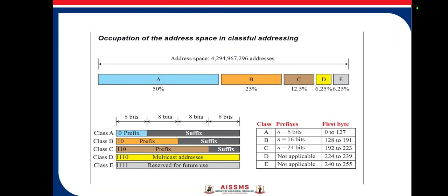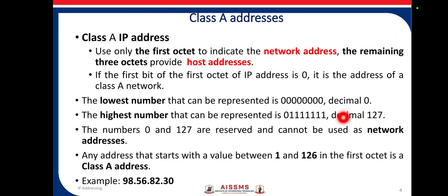For class A IP addresses, the first octet is the network address and the remaining three octets are the host address. The first bit of the first octet is zero. The lowest number can be represented using decimal zero and binary 00000000, and the highest number is decimal 127, represented as 01111111.